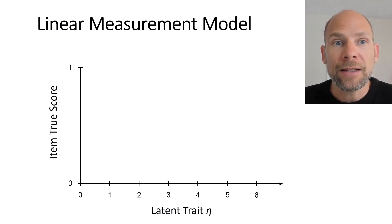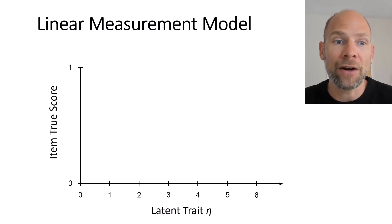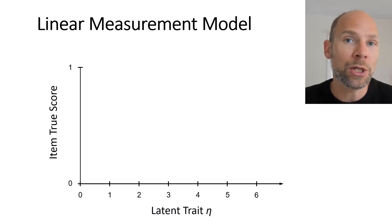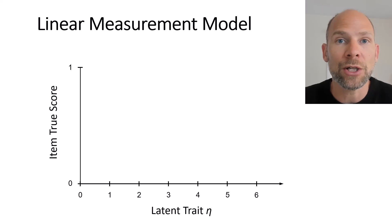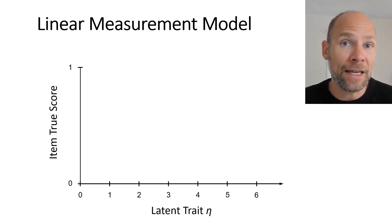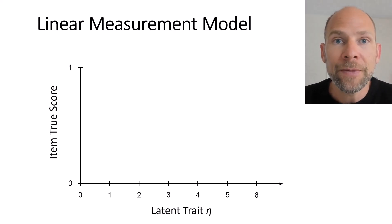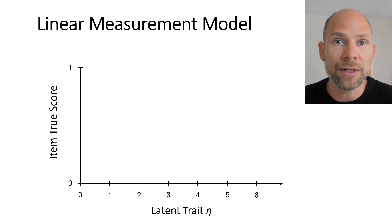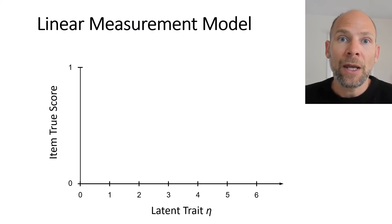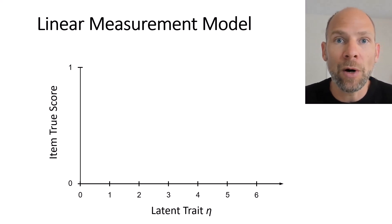Here you can see a standard linear measurement model — the type used in classical test theory for continuous data. Classical test theory assumes a linear relationship between the latent variable or latent trait eta on the x-axis and the item score. But in our case the item score is not continuous; it is bound between zero and one. You can only have a correct response of one or an incorrect response of zero.